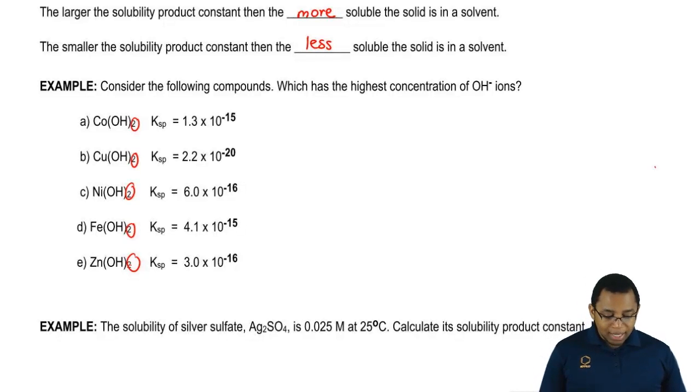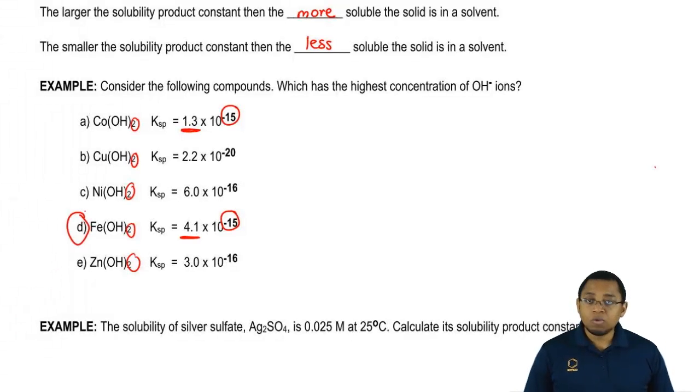So all we got to do here is look to see which Ksp is the biggest. Here we have two that are to the negative 15. But this one is 4.1 and this one is just 1.3. So D would be our correct answer.